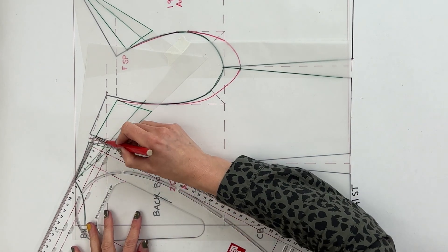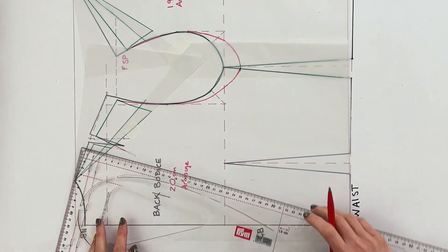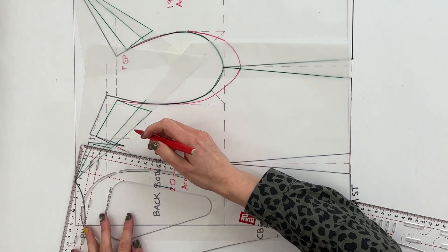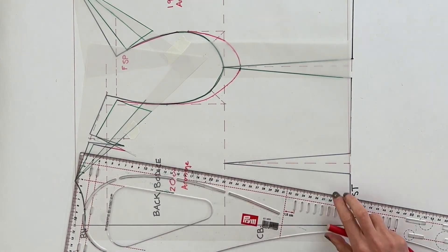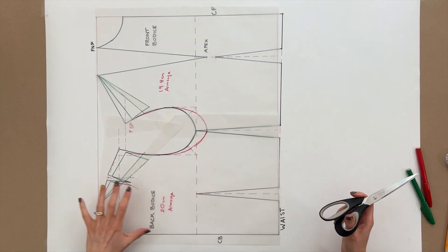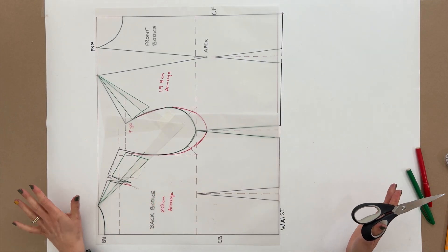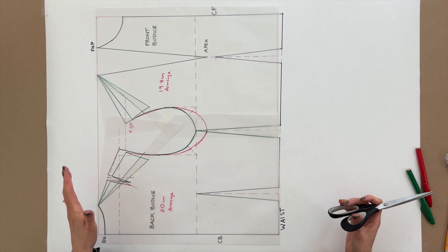That is for me so I'm happy with that. Just redraw in your dart. Obviously the point of the dart has just moved slightly and also the length of it will be slightly reduced because you've taken the volume out there.